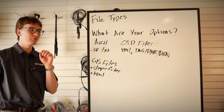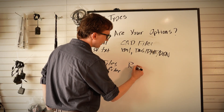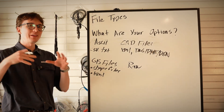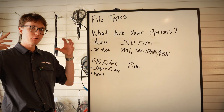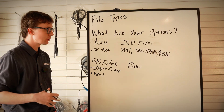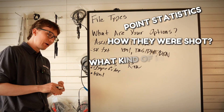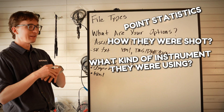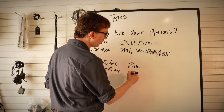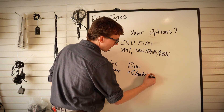The final file type is your RAW files. RAW files are kind of an amalgamation of all of these — almost like the black box in an aircraft for your project. They contain all the extra information including your point statistics, how they were shot, and what instrument was used. So those are your four file options.